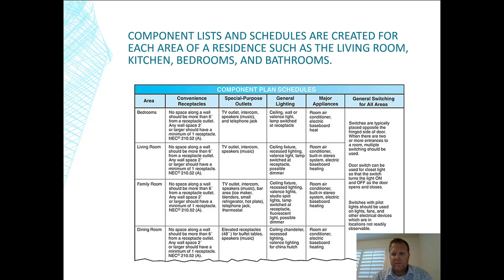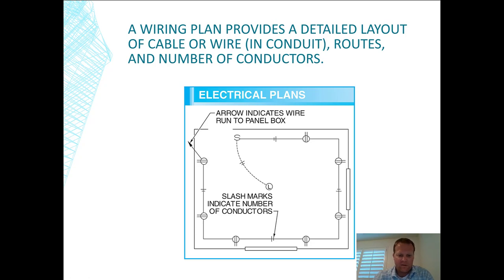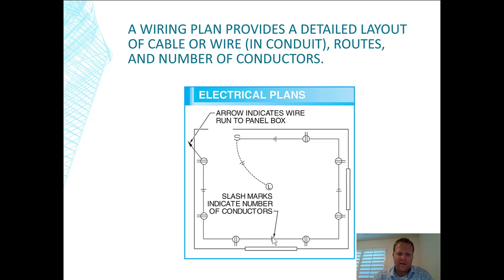The wiring plan usually shows something like this. I've seen outlets where they specifically show wire location on drawings, but usually they don't. It is important to know what the arrow on a drawing means — it usually indicates the circuit is going back to the panel box. All these outlets, the switch, and the light are connected on one circuit going back to the panel.